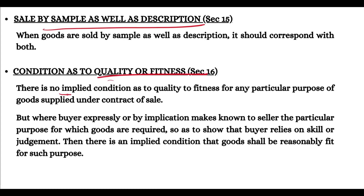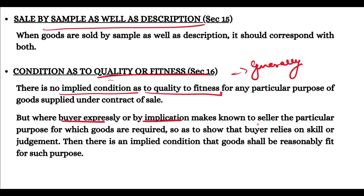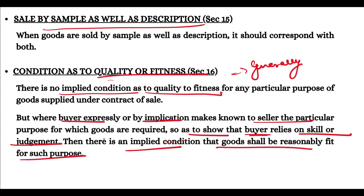Condition as to quality and fitness is under Section 16. Normally there is no implied condition as to quality or fitness — whether a particular product is fit or not fit for a particular purpose. However, if the buyer expressly or impliedly makes known to the seller the particular purpose, and the buyer relies on the seller's skill and judgment, then the goods should be reasonably fit for that purpose.